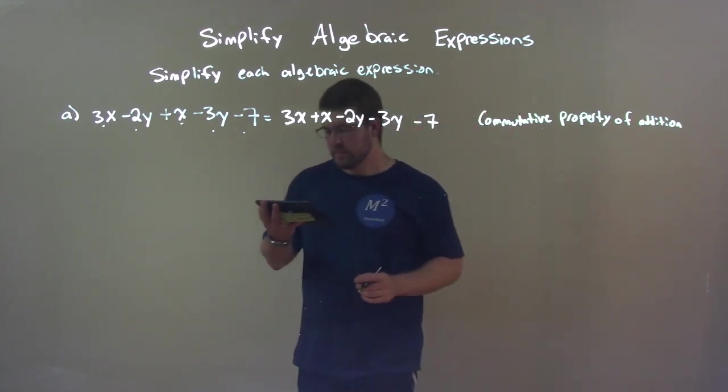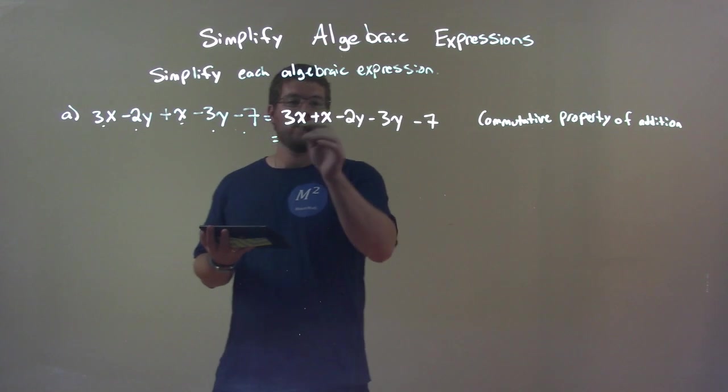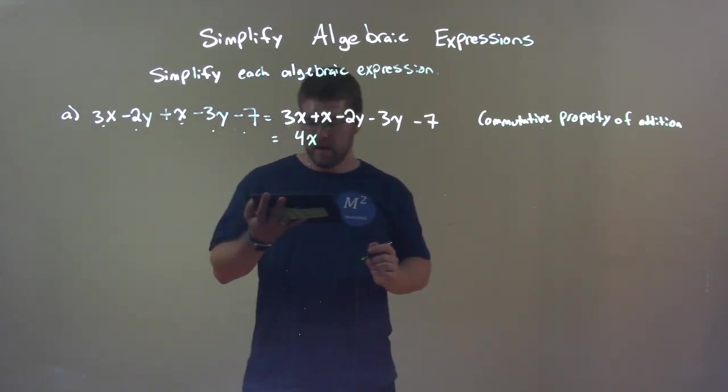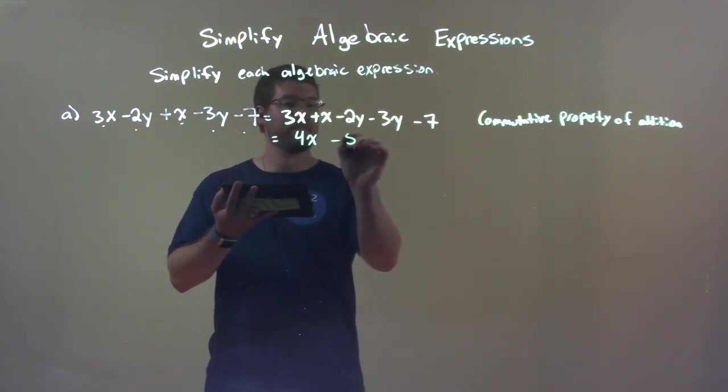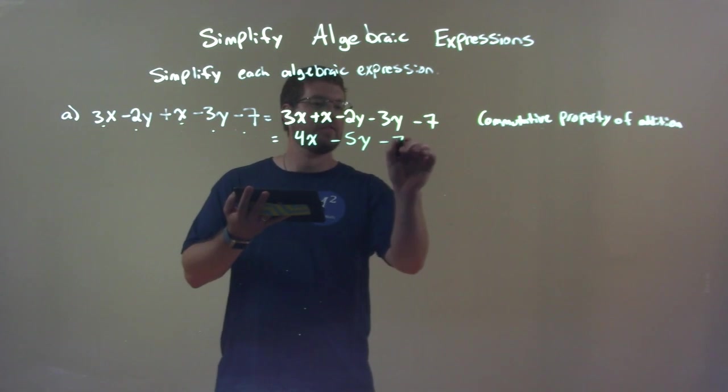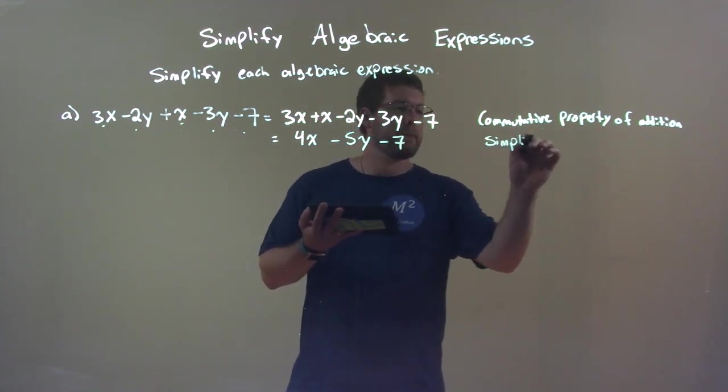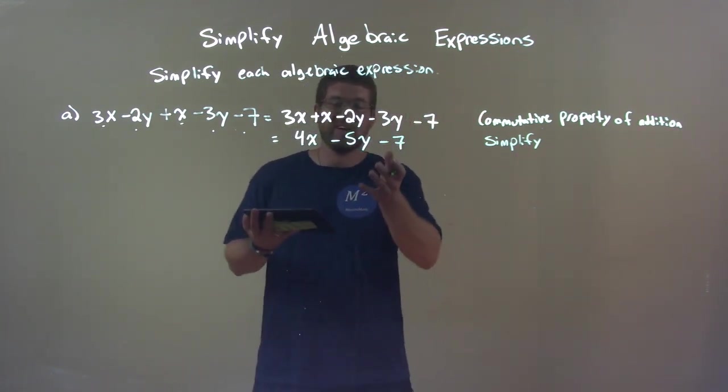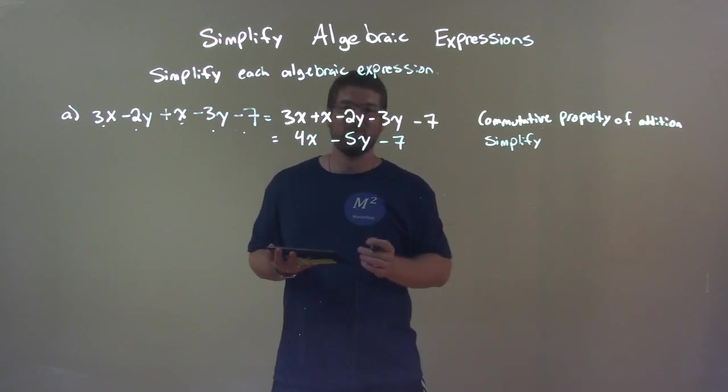Okay, and then, now we combine our like terms. 3x and x become a 4x. We're adding them together. A minus 2y and a minus 3y is a minus 5y. And then we have a minus 7. And that step was just simplify. And so now we're done. We can't break it up or simplify it anymore. And so we're finished.